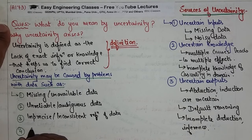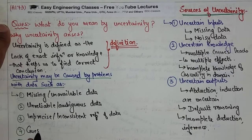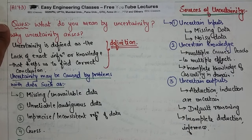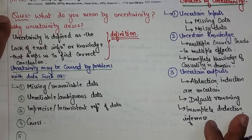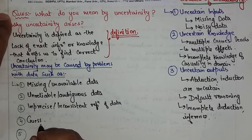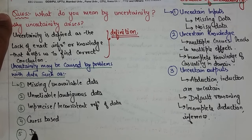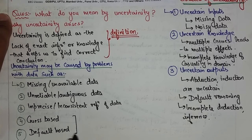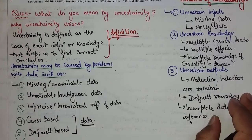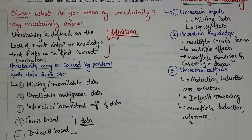Fourth, data may just be the user's best guess — guess-based data which we cannot always consider accurate. Fifth, data may be based on defaults — default-based data, where assumptions are made that this is how things typically are. Both of these also become a problem.